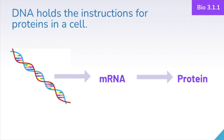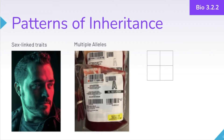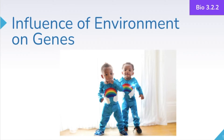You might have studied this a little bit before in your previous science classes, but we'll find that it gets a little bit more complex than just simple dominant and recessive traits. We're going to look at different patterns of inheritance and you'll be able to predict offspring ratios based on a variety of inheritance patterns including regular dominance, codominance, incomplete dominance, multiple alleles, sex-linked traits, and of course we'll be working with Punnett squares as well.